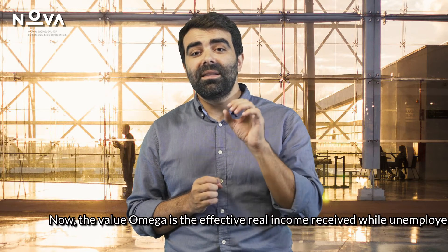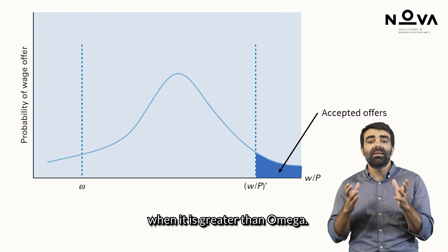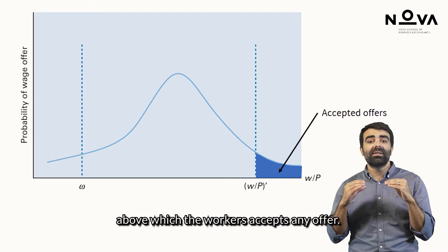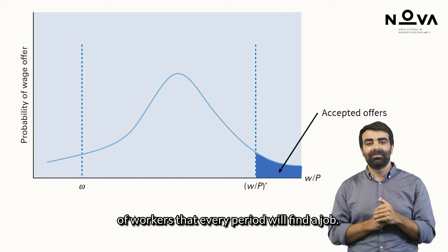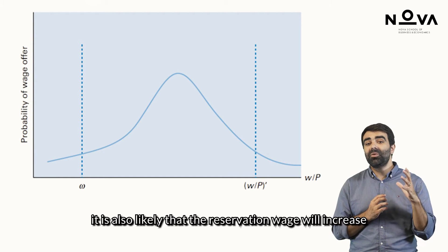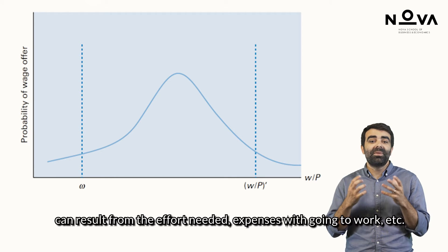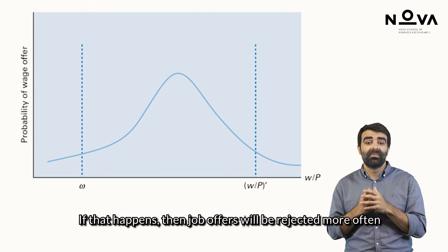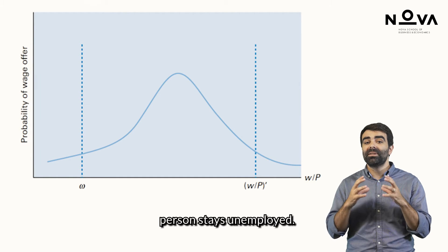The value omega is the effective real income received while unemployed. The key decision is whether to accept a real wage when it is greater than omega. Let W/P* be the reservation wage — the level of the wage offer above which the worker accepts any offer. As a consequence, the shaded blue area represents the share of workers that every period will find a job. If omega increases — think of the value of the unemployment subsidy — it is likely that the reservation wage will increase accordingly, accounting for the effort needed and expenses with going to work. Job offers will then be rejected more often, raising the expected duration of unemployment.